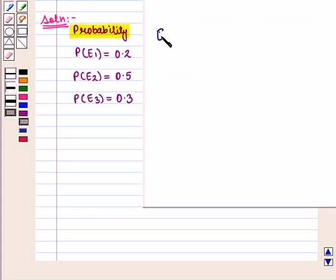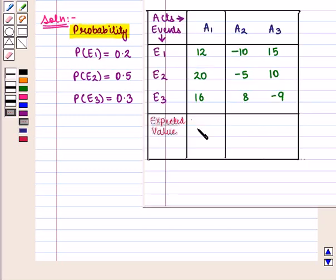And we know that the expected value is given by the formula E of X is equal to summation of x into probability of x. So here expected value of act A1 will be equal to